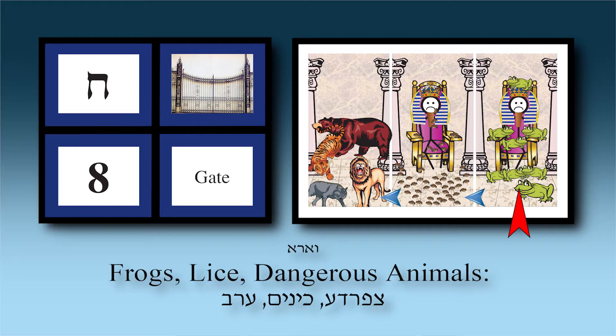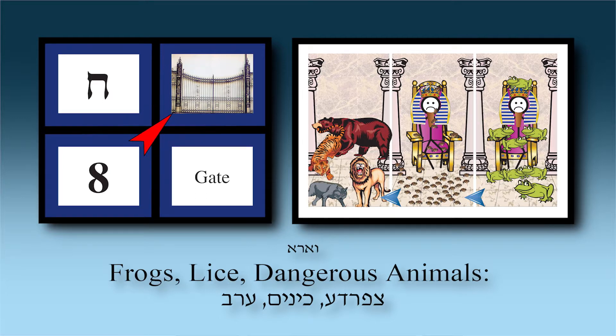In chapter eight — Pharaoh didn't listen. The Tzfardea came; Pharaoh begged Moshe to remove them, Moshe davened, they left exactly on time — yet Pharaoh still refused. So came the Kinim — lice that entered inside the actual bodies of the Egyptians; no matter how much they scratched, they couldn't remove them. Still Pharaoh didn't let us go. So came the third Makkah: Arev — wild animals from all over. These are three Makkot in chapter eight.